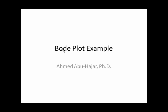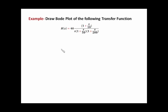All right, welcome folks. We're going to do a Bode plot example. We are asking you to draw a Bode plot of the following transfer function: H(s) equals 40 times (1 plus s over 10) over s times (1 plus s over 50) times (1 plus s over 200).